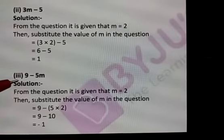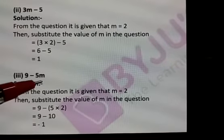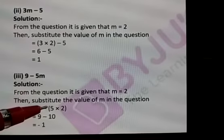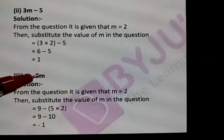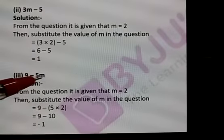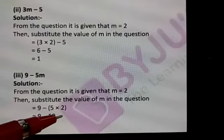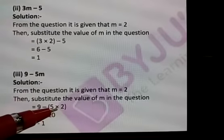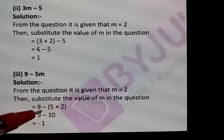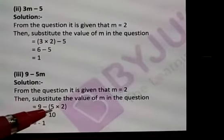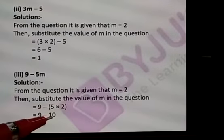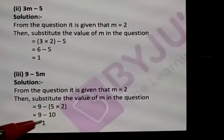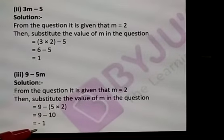The same way here: m value is 2, 9 is as it is, minus 5 is as it is, in the place of m substitute 2. Because it is given in the equation. So 9 minus 5 into 2 is 10, plus 9 minus 10 gives you minus 1.